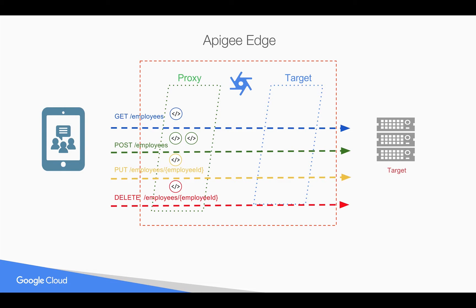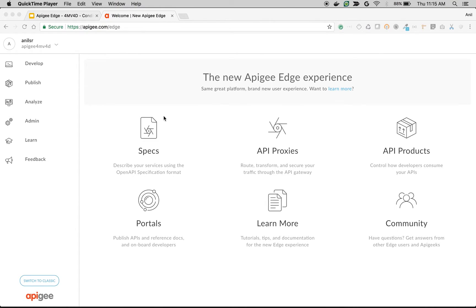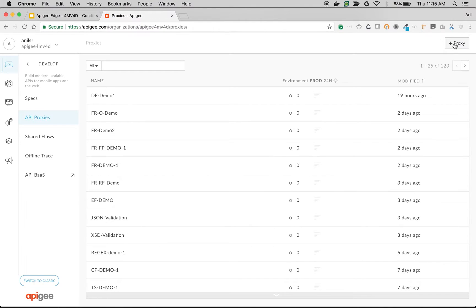You can easily do that in Apigee Edge: modify the API behavior based on conditions that you define, and attach a bunch of policies in both request and response. You can do that using conditional flows in Apigee Edge. Let's create a simple API proxy to see conditional flows in action.